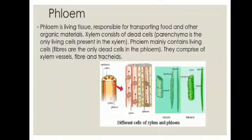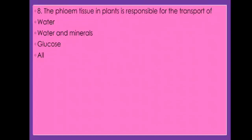Next concept: phloem. Phloem is living tissue responsible for transporting food and other organic materials. Xylem consists of dead cells — parenchyma is the only living cell present in xylem. Phloem mainly contains living cells; the fibers are the only dead cells in phloem. They comprise xylem vessels, fibers, and tracheids. Eighth question: The phloem tissue in plants is responsible for the transport of — water, water and minerals, glucose, or all? The phloem tissue conducts glucose.